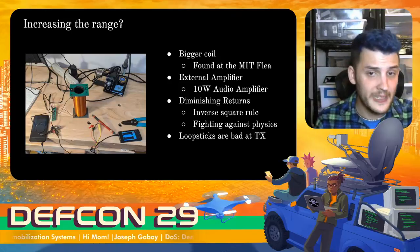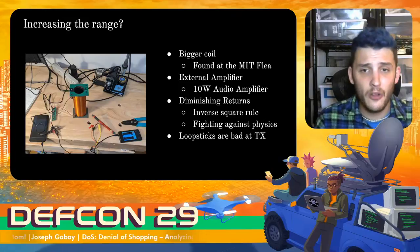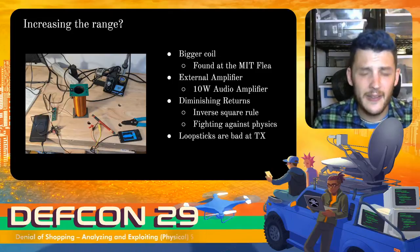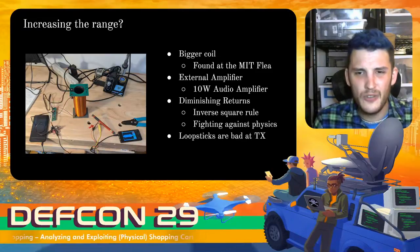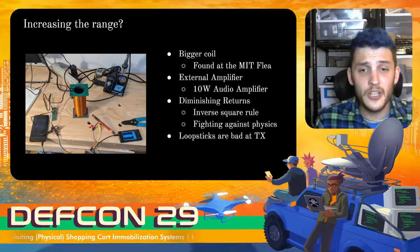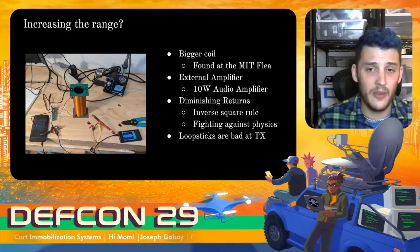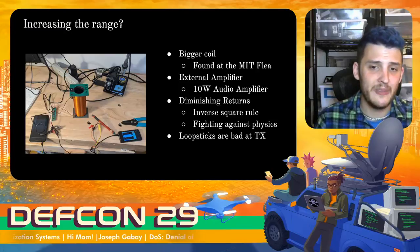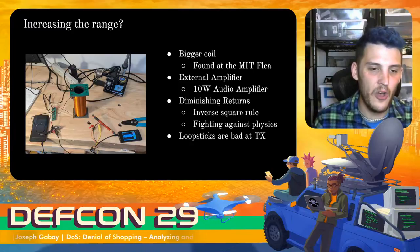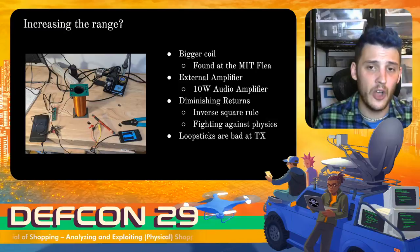Loopstick antennas aren't particularly good transmitters, and I was curious to see how much further I could get it to go. So I picked up a large solenoid coil at the MIT Flea, as well as a 10-watt audio amplifier. I hooked it all up, played the signal, and got a range of maybe 2 to 3 feet at 10 watts — not great, but pretty good. Unfortunately, we're hitting diminishing returns here because we're fighting the laws of physics. Magnetic signals decay according to the inverse square rule — to double the range you need to quadruple the power. It gets tricky to pump a lot of power through a small bit of magnet wire without things getting hot and melty, so there is an upper limit to how far you can lock or unlock a cart using this approach.